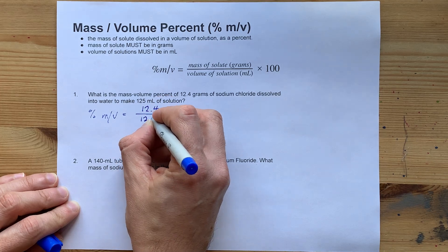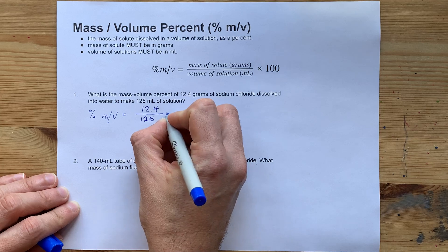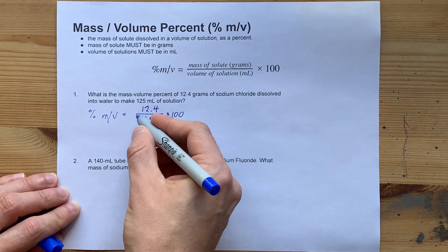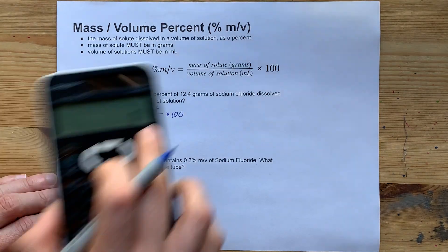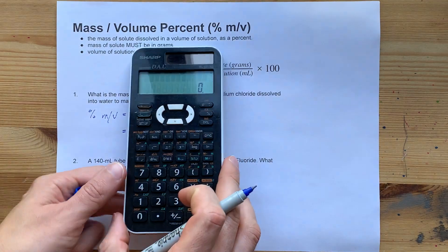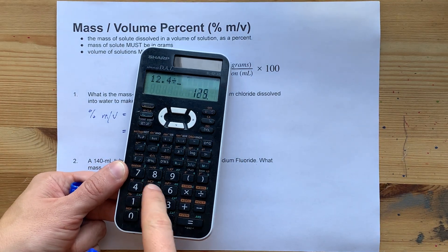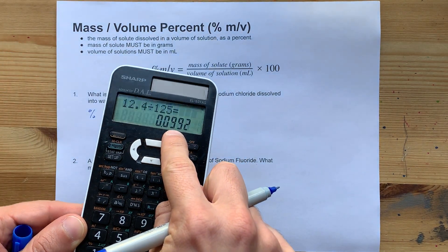Here, they told us it's 125 milliliters. Now, to get the units of percent, you can multiply by 100. Some teachers will leave that off and just convert it to a percent by moving the decimal place later. On my calculator here, that's 12.4 divided by 125.